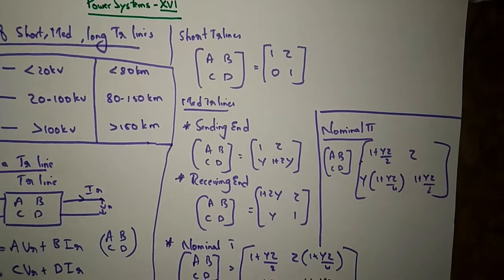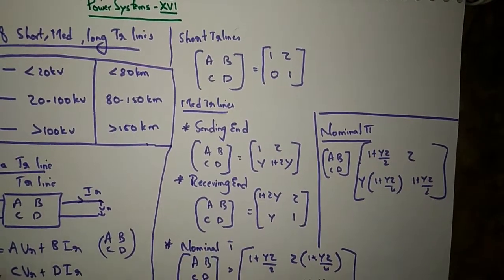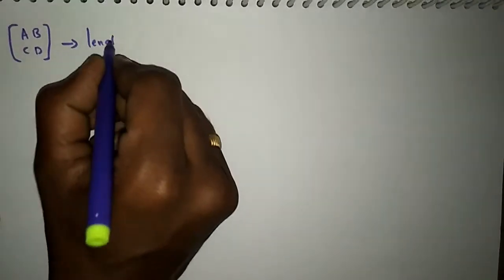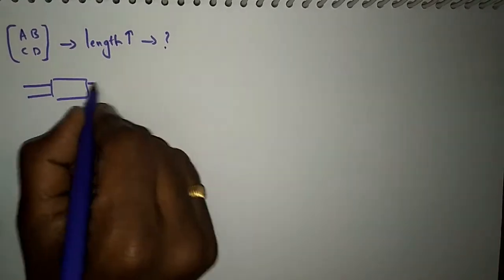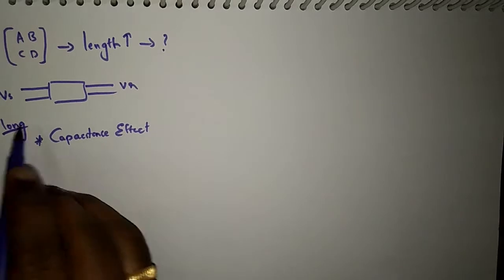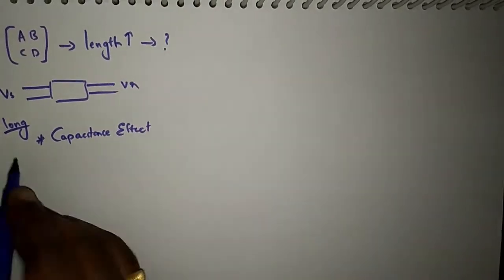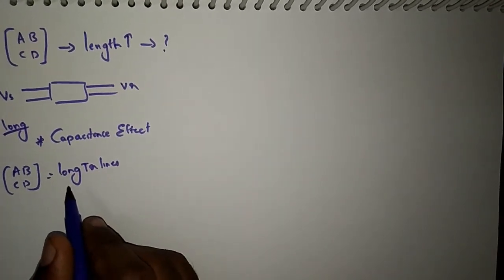Now we will discuss the ABCD parameters from an examination point of view. If the length of the transmission line increases, what happens? For a long transmission line, we have the concept of the capacitance effect. The capacitance effect is significant for long transmission lines, though for most technical examinations they generally will not ask about long transmission line ABCD formulas specifically.